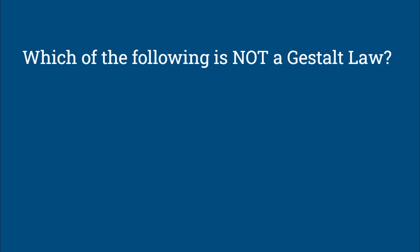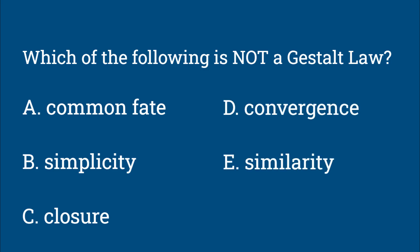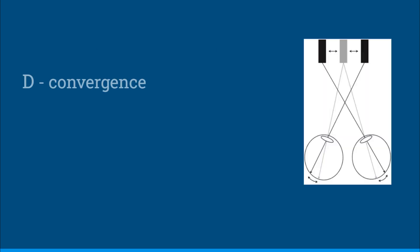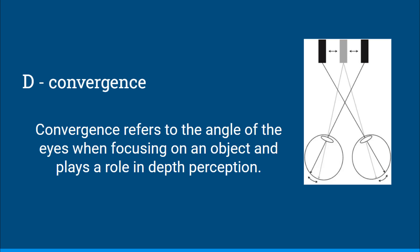Which of the following is not a Gestalt law? Common fate, simplicity, closure, convergence, or similarity. The answer is D, convergence. This is not a Gestalt law. Convergence refers to the angle of the eyes when focusing on an object and it plays a role in depth perception. If you have to point your eyes closer together, that angle tells you the object is close to you, but if your eyes are looking more straight ahead, that tells you the object is farther away.